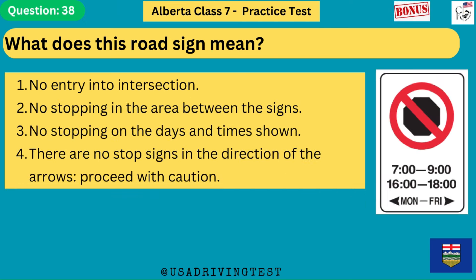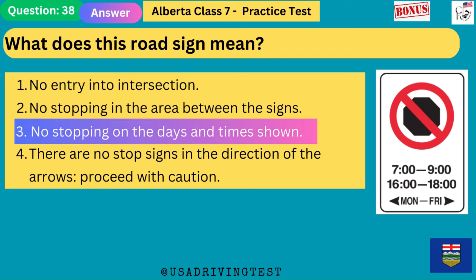What does this road sign mean? 1. No entry into intersection. 2. No stopping in the area between the signs. 3. No stopping on the days and times shown. 4. There are no stop signs in the direction of the arrows, proceed with caution. The answer is 3: no stopping on the days and times shown.